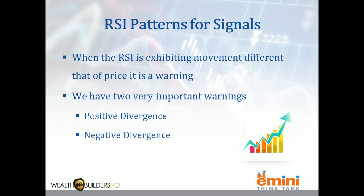One of the main things to look for with the RSI is what's called a pattern for a signal. The signals we can get are whether we should buy or sell and whether or not the zone is likely to hold. We have two different warning signals: positive divergence and negative divergence.